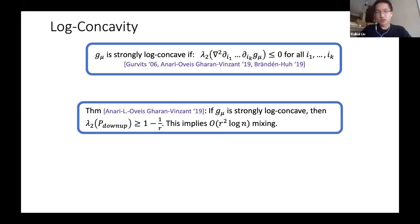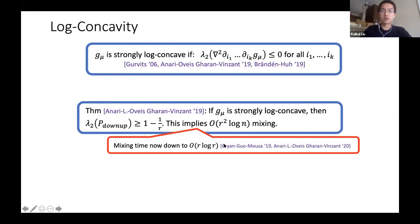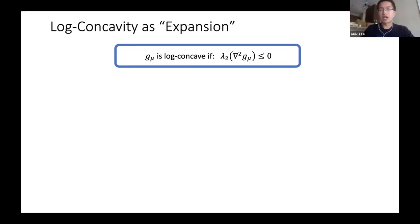Strong log-concavity says not only should the polynomial be log-concave, but all partial derivatives should also be log-concave. From the sampling and counting perspective, in recent work we showed that if the polynomial is strongly log-concave, then the down-up walk has a nice bound on its spectral gap, implying very nice mixing. This has since been improved to O(n log n) mixing time in recent works by Cryan, Guo, Mousa, and Anari, Liu, Oveis-Gharan, and Vinzant.